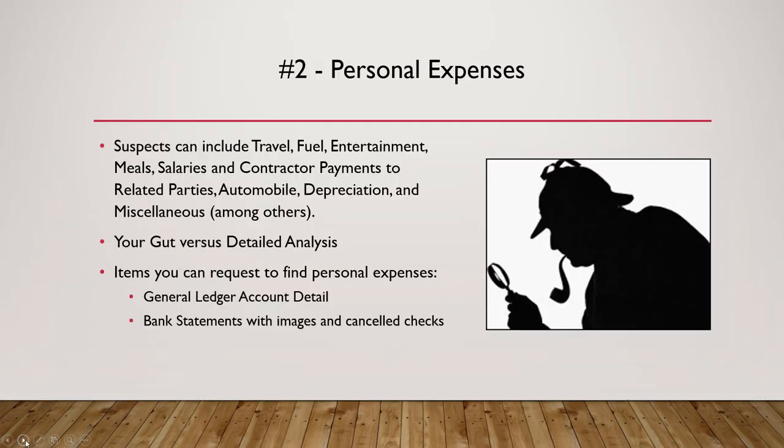Red Flag 2: Personal expenses. Nobody's seen these before, right? They do happen, fairly frequently. Suspects can be all over the board — travel, payments to related parties such as family members, automobile expense, depreciation, and assets on the books that are personal, like snowmobiles or personal vehicles. Your gut may tell you they're there, but detailed analysis will carry the day. Things you can request include general ledger account detail and bank statements with images and cancelled checks.